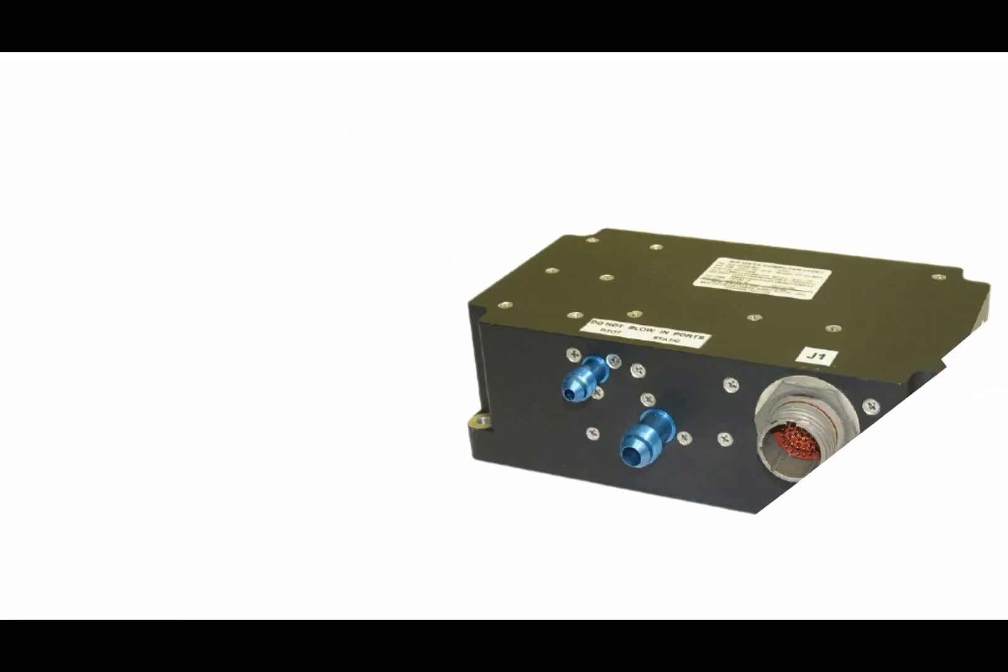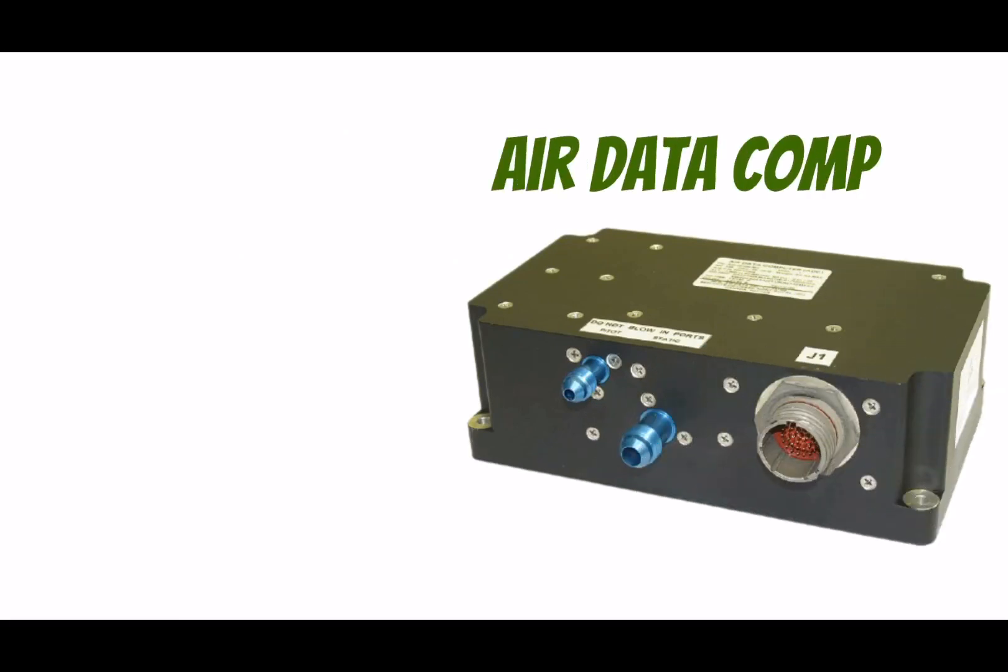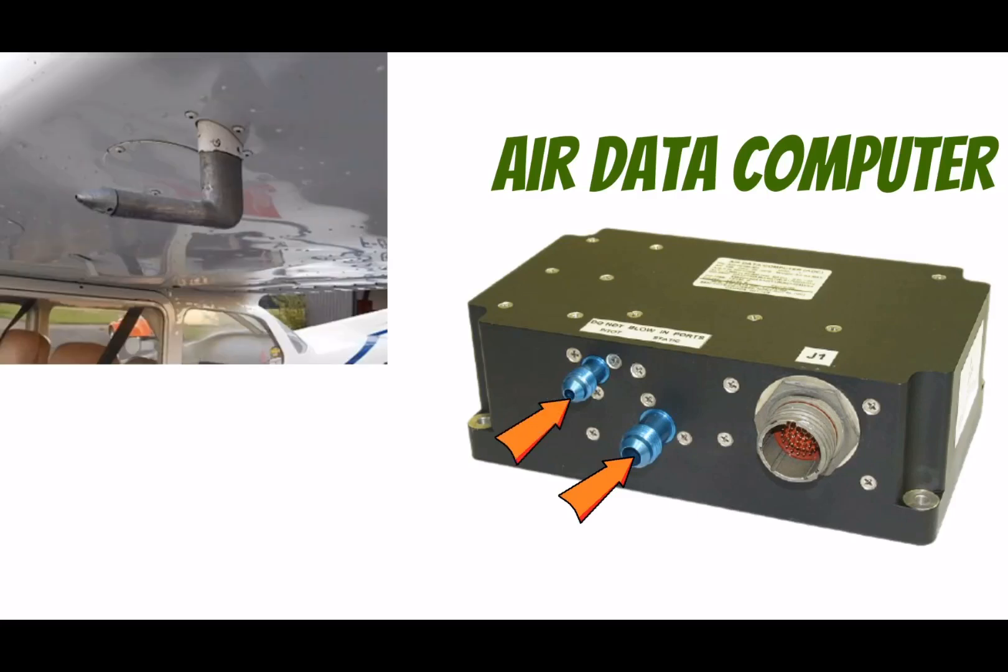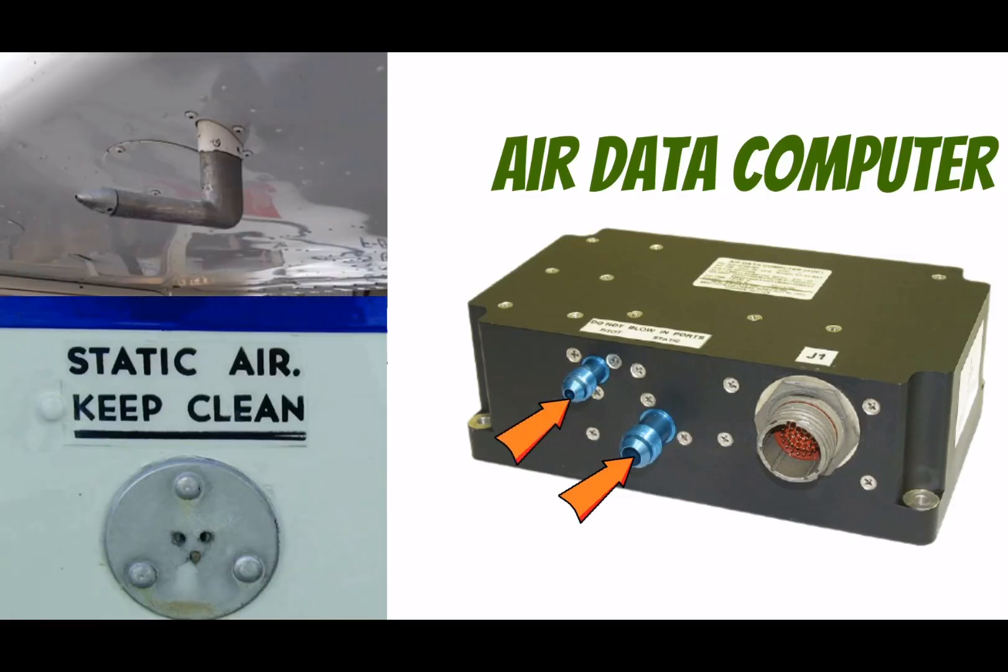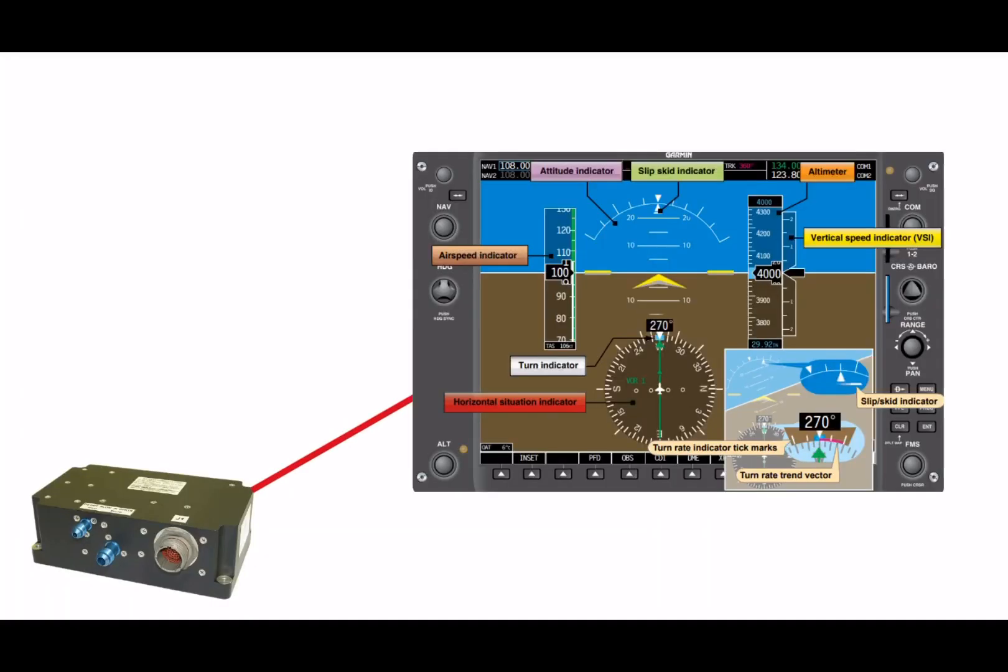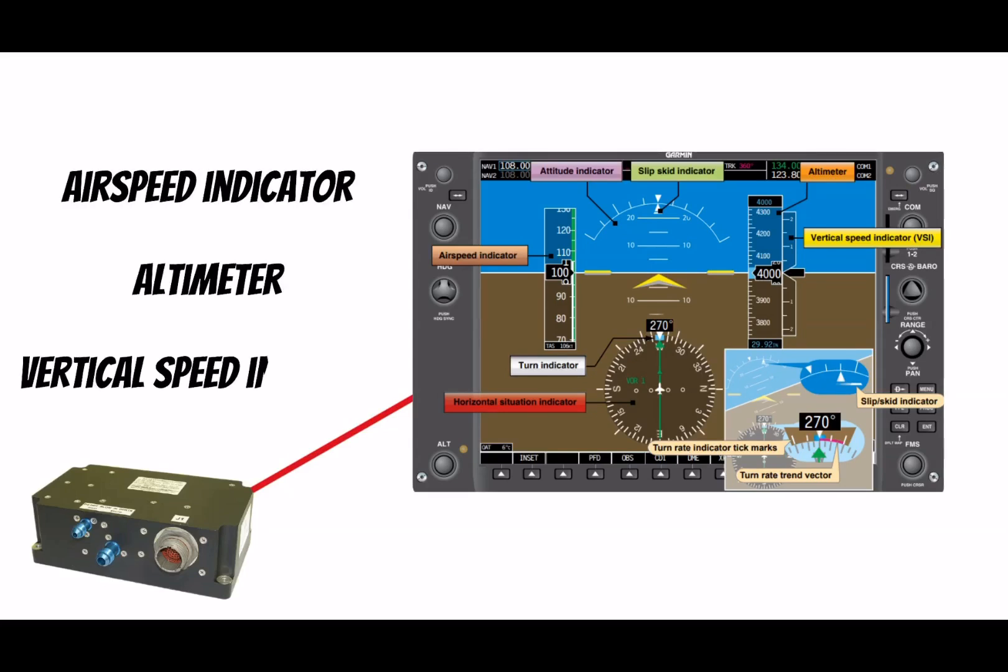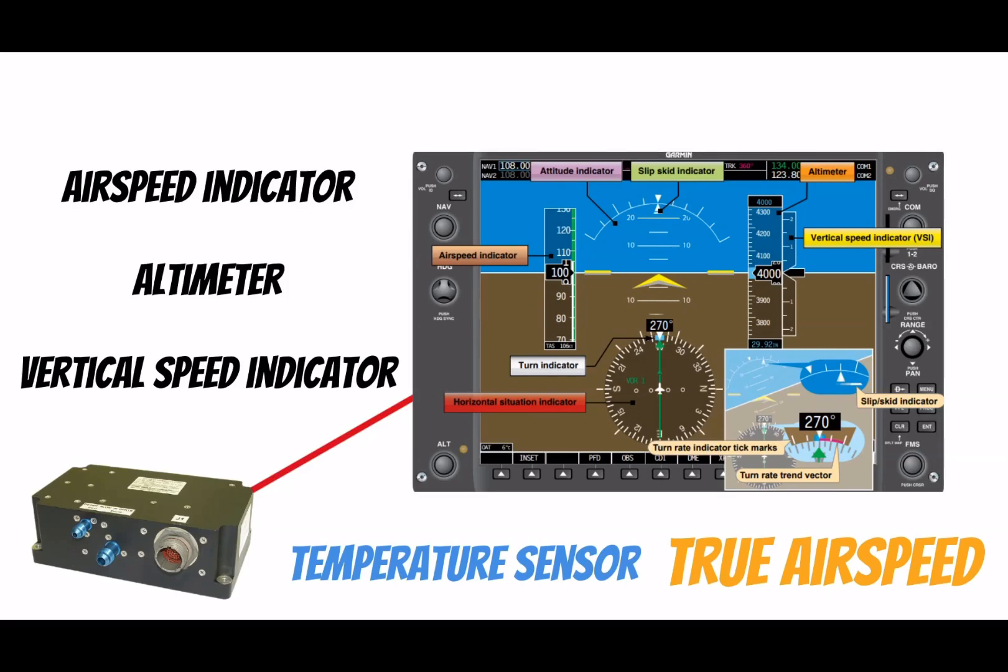Another one of these fancy electrical boxes on these new airplanes is called an air data computer. This guy takes dynamic air pressure from the pitot tube and static air from the static port and converts it into information that the pilot can use. Then it takes that information and sends it over to the PFD so it can be read on the airspeed indicator, the altimeter, and the vertical speed indicator. One cool thing about the air data computer is that it also includes temperature sensors. And this allows it to give you your true air speed in flight.